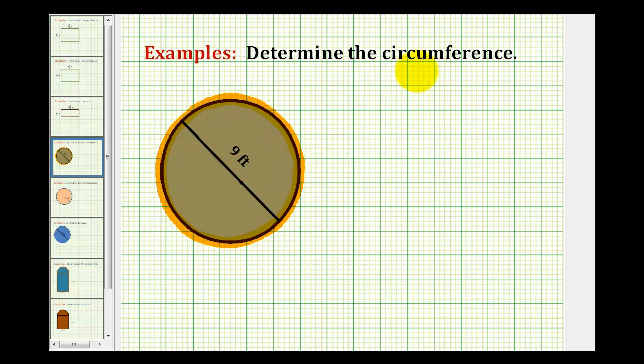There are two formulas that can be used to determine the circumference of a circle. We have the circumference is equal to pi times D, where D is the diameter of the circle. And we can also use two times pi times R, where R is the radius of the circle.